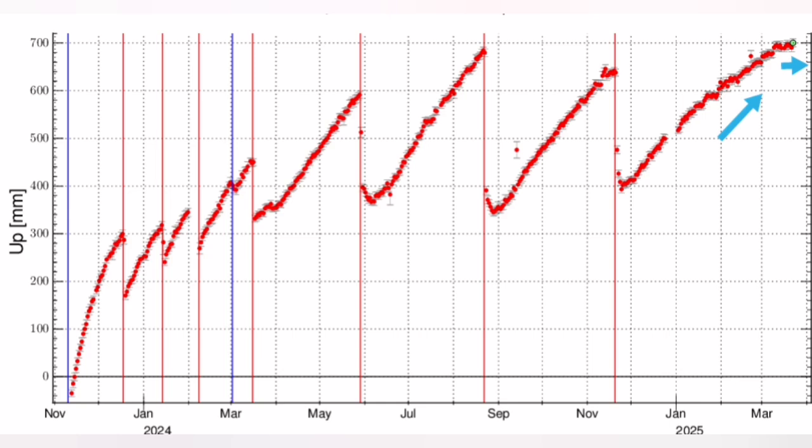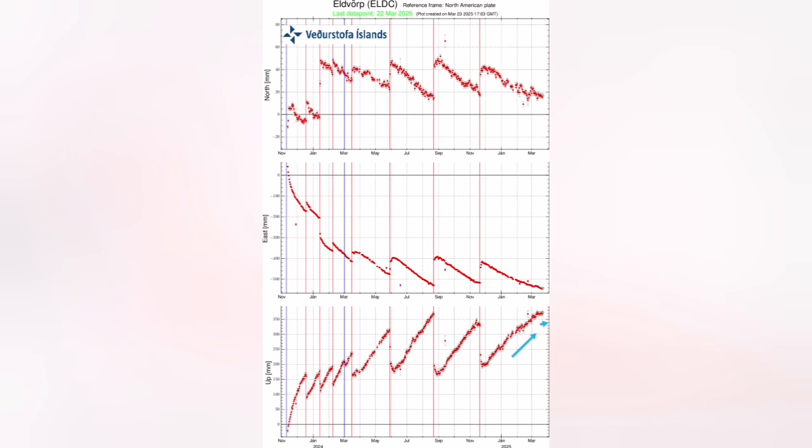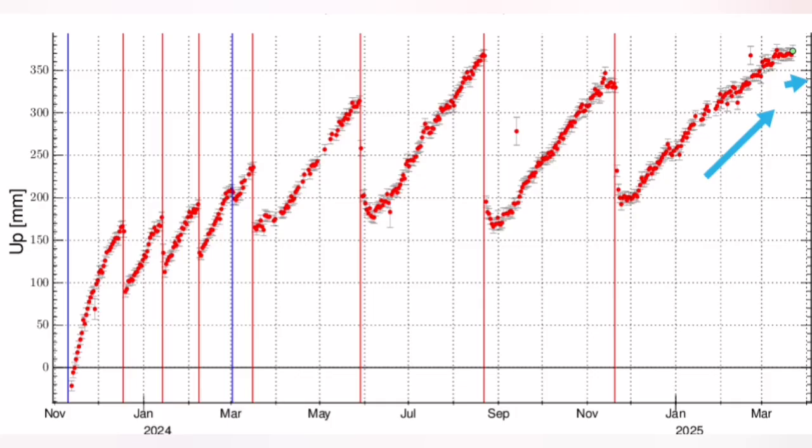Land rise stopped because the entry and exit of the magma to the reservoir was equal, so the land stopped rising. It was staying stationary at the level that it was. We are seeing this in almost all the stations in that area of the Svartsengi volcanic system.